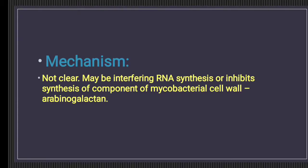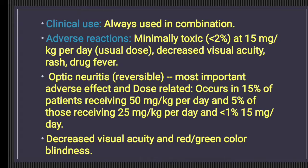Clinically, ethambutol is always used in combination. Adverse effects occur in less than two percent at the usual dose of 15 mg per kg per day. A decrease in visual acuity is a major adverse drug reaction. The characteristic ADR of ethambutol is optic neuritis — the inability to differentiate between red and green colors, also called red-green color blindness. This effect is reversible when the drug is stopped.